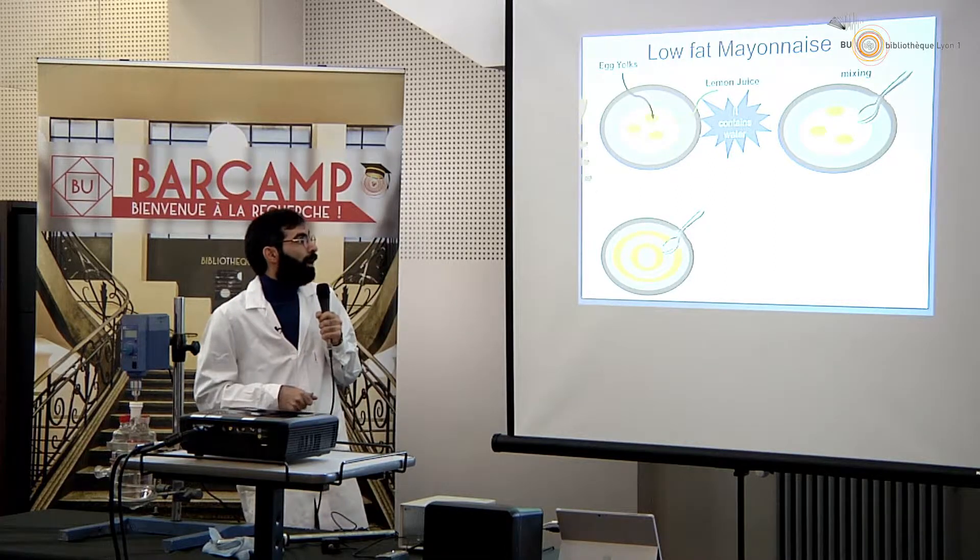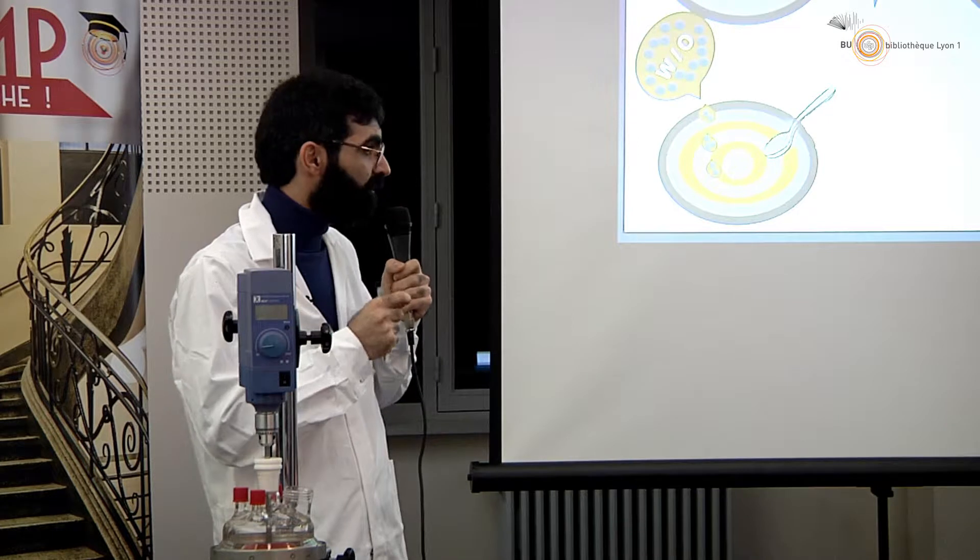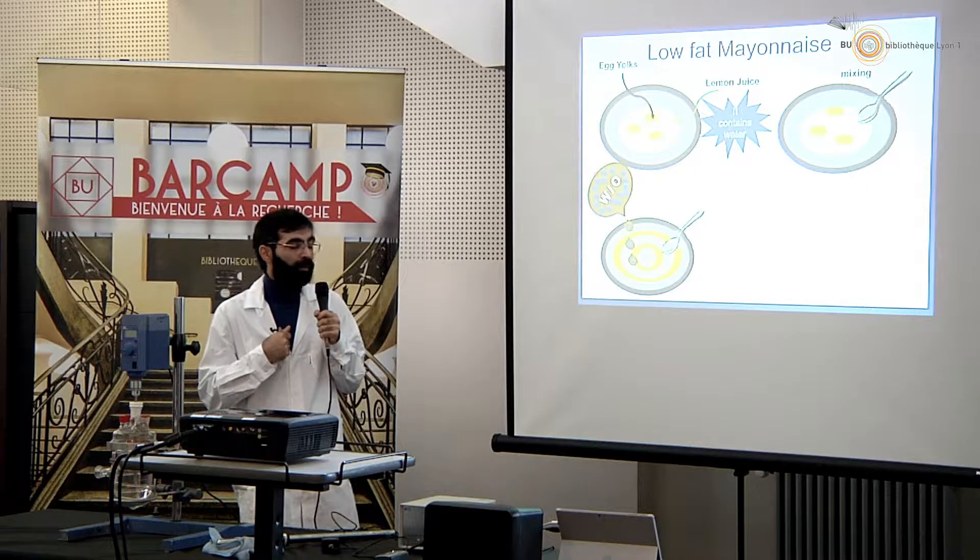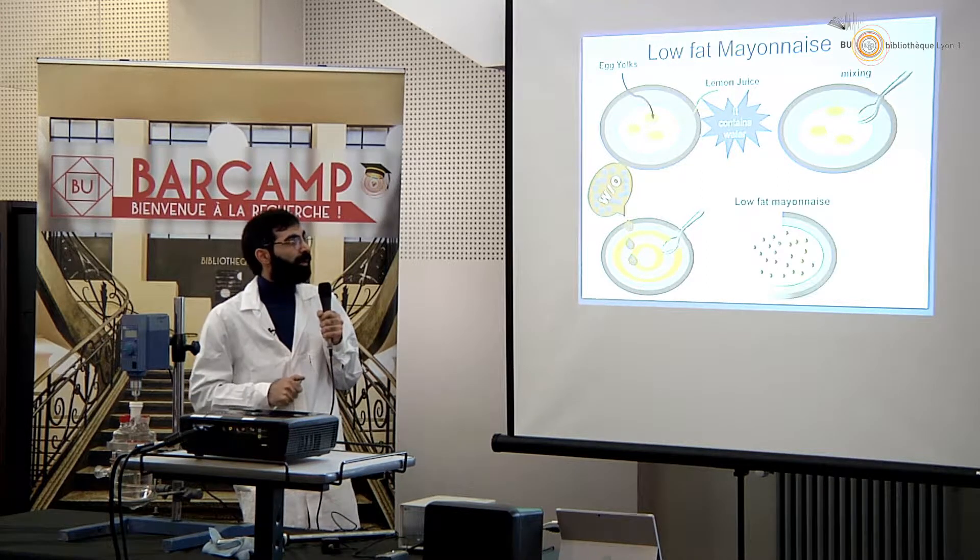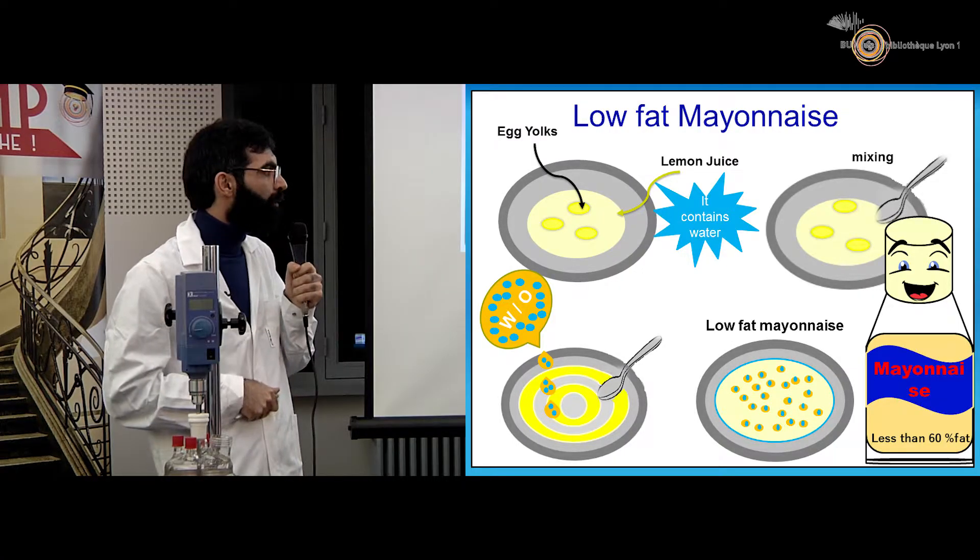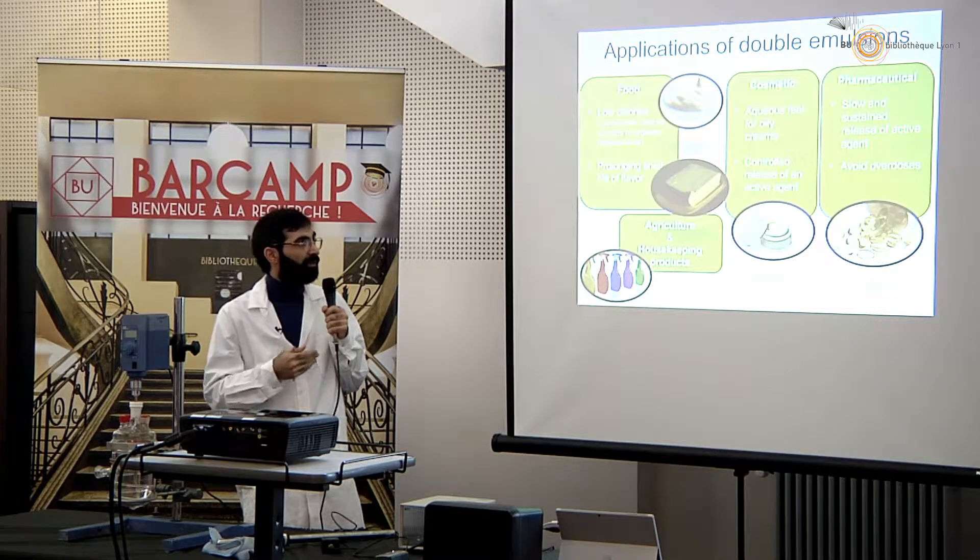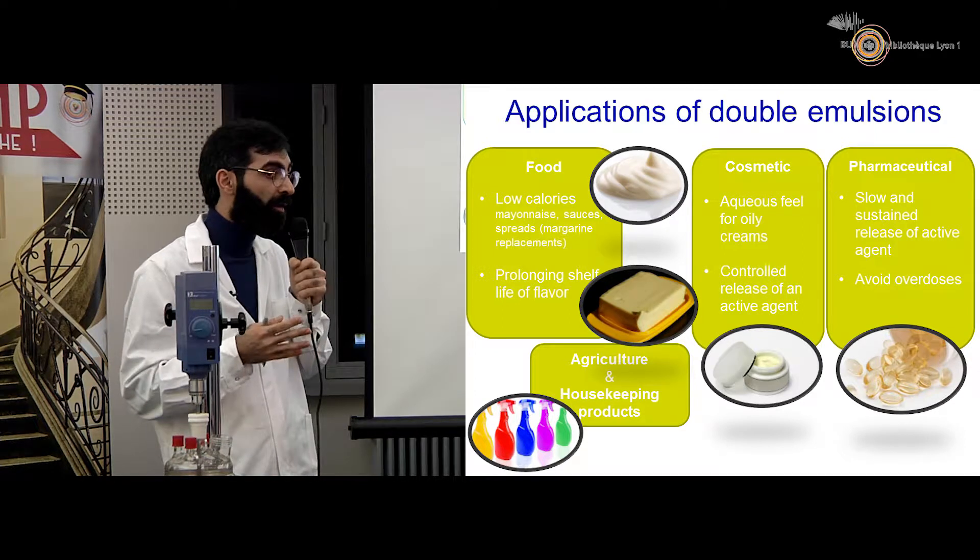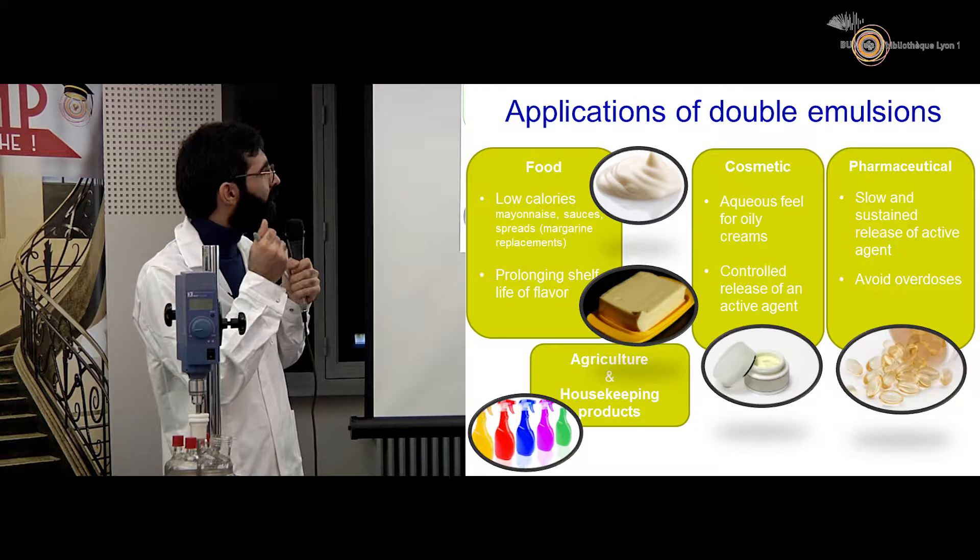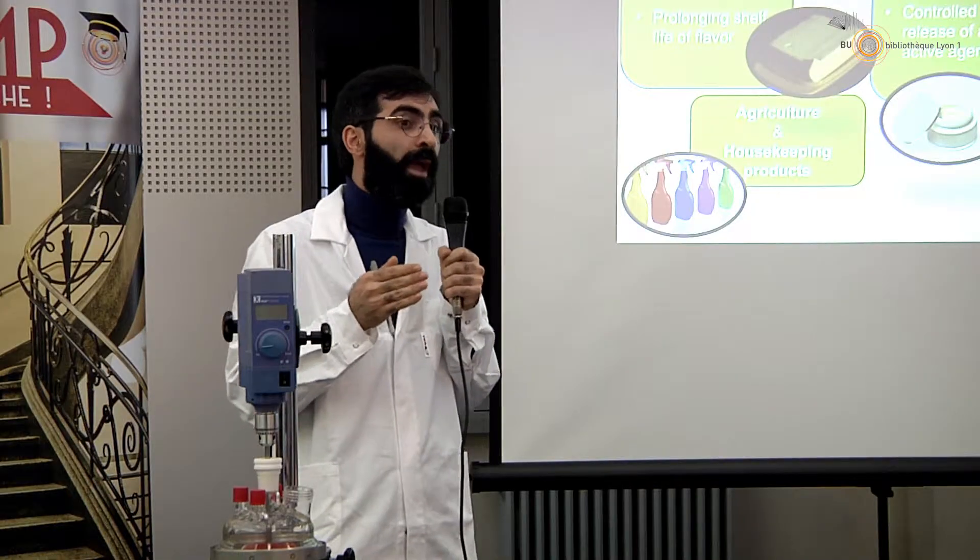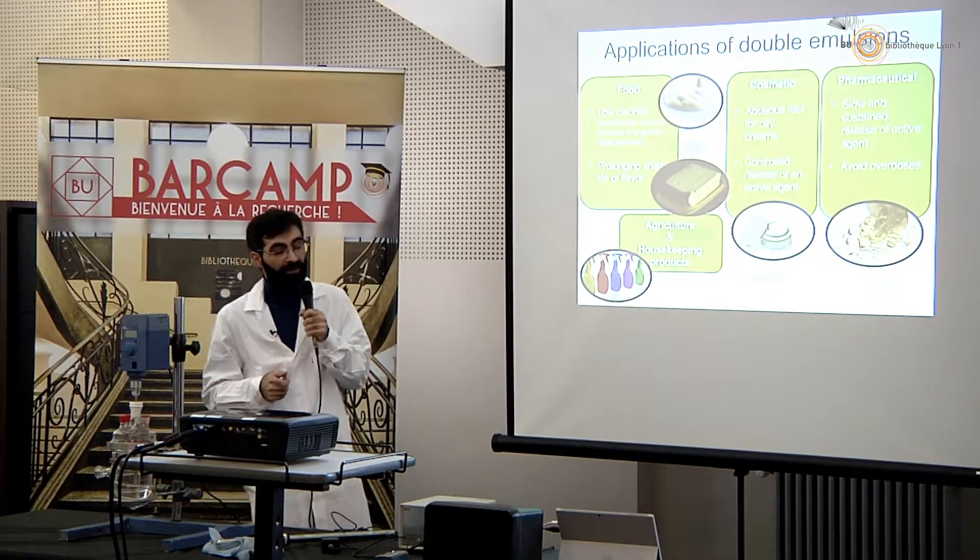We will ask double emulsion to help us. By putting the droplets of water inside the droplets of oil we will decrease the amount of fat in a way that the texture and properties of our product wouldn't change. Also we can add some flavors inside that water to add secondary taste in our product. In this way we will make low fat mayonnaise which is very happy and the fat would be less than 60%. Double emulsions other than food have applications in other industries like cosmetics for controlling the release of active agents like vitamins in creams, in pharmacy for similar applications, in agriculture, housekeeping products, and also they are used for middle parts of processes in some other chemistry and biochemistry industries.